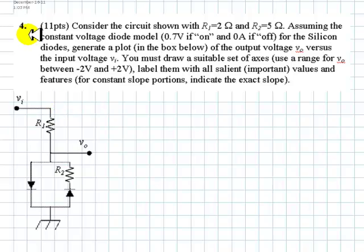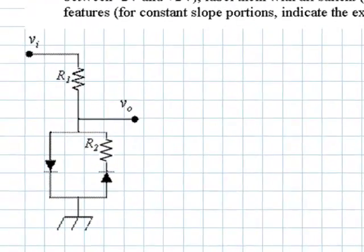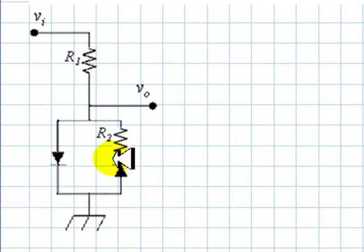This is question 4 of the final exam, 4 out of 6 questions. Consider the circuit shown, this one, with R1 2 ohms and R2 5 ohms.